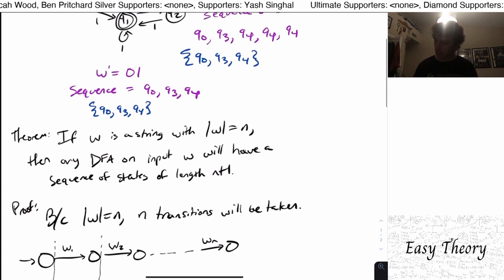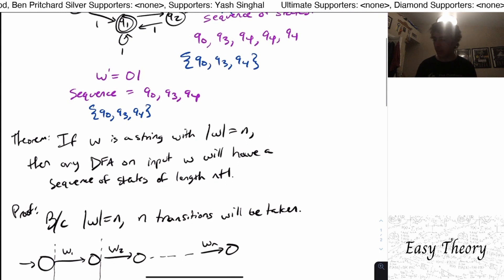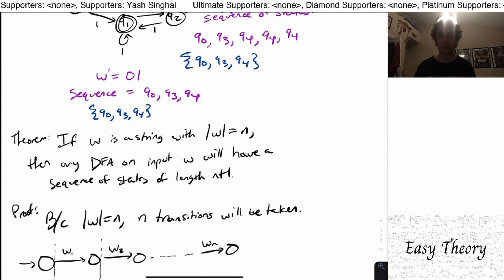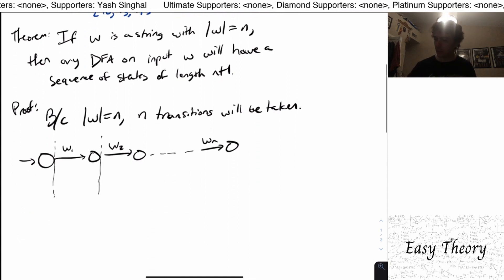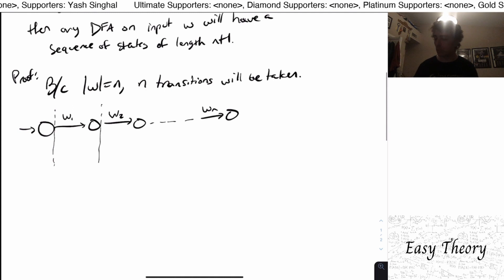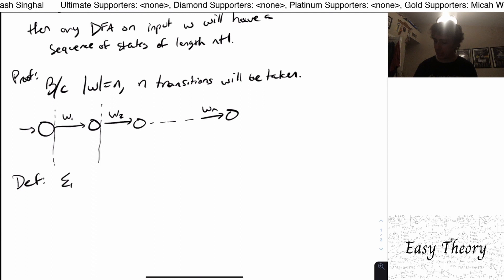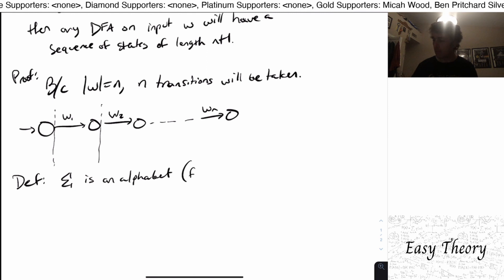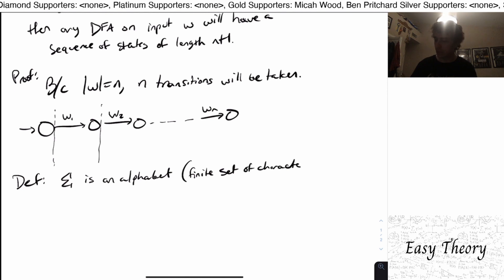Okay, so that's kind of nice that we know how long the DFA will always take on a given input, if you know the length of the input itself. Okay, so we should introduce some more definitions here. So let's just say that sigma here is an alphabet. So and from recall from before that that just means a finite set of characters.